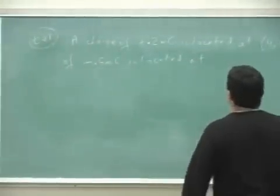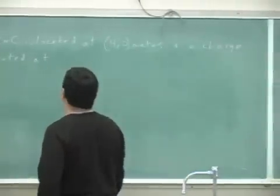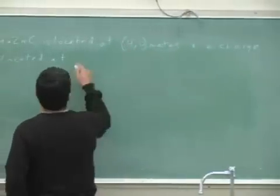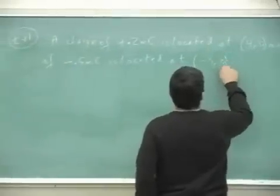So a charge of plus 0.2 millicoulombs is located at 40 meters, and a charge of negative 0.5 millicoulombs is located at negative 30 meters.